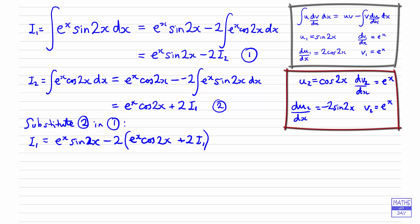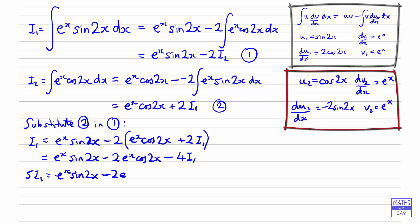Multiplying out: the e^x sine 2x term doesn't change, then minus 2 times e^x cos 2x, then minus 2 times 2i1 gives minus 4i1. Adding 4i1 to both sides gives 5i1 equals e^x sine 2x minus 2e^x cos 2x. Since we no longer have an indefinite integral on one side, we add a constant of integration k. Dividing both sides by 5 gives our answer.